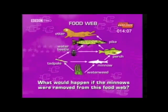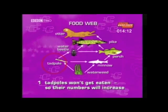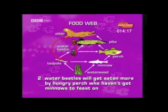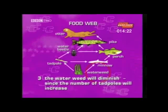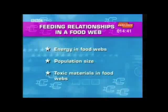If the minnows were removed from this food web, three things would happen. One, the tadpoles won't get eaten, so their numbers will increase. Two, water beetles will get eaten more by hungry perch who haven't got minnows to feast on. And three, the waterweed will diminish since the number of tadpoles will increase. The relationships in these food webs can get quite complicated — if you weren't sure of the answer, why not rewind and go over this section again?